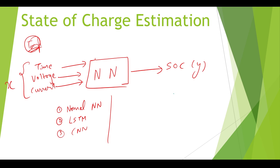First, we will normalize our input features X in the range of 0 to 1. We will not normalize SOC because it is the target variable. After understanding the data, we will do a train and test split.